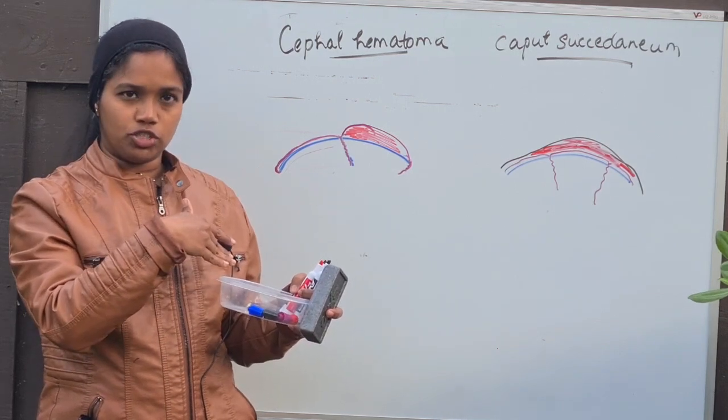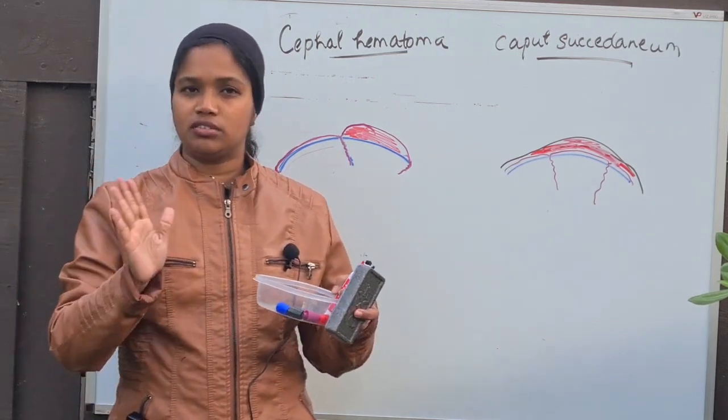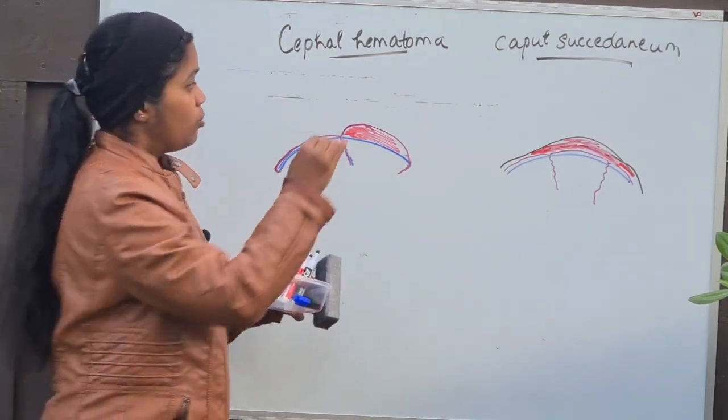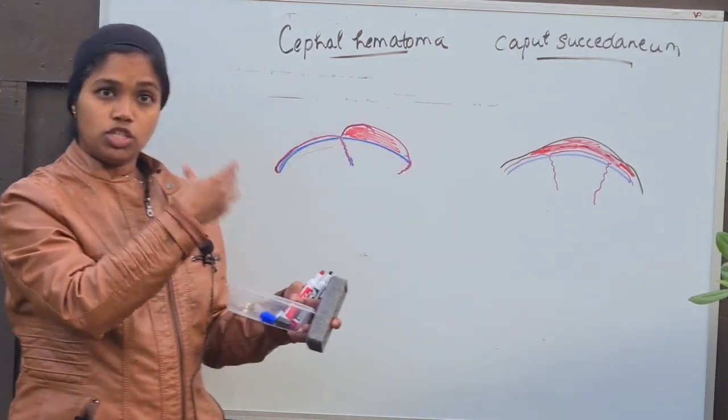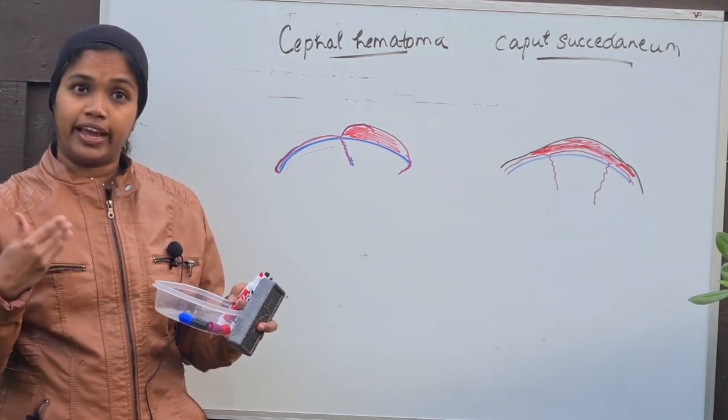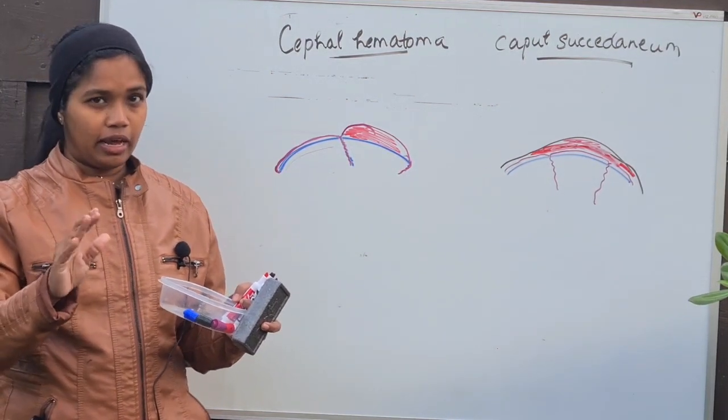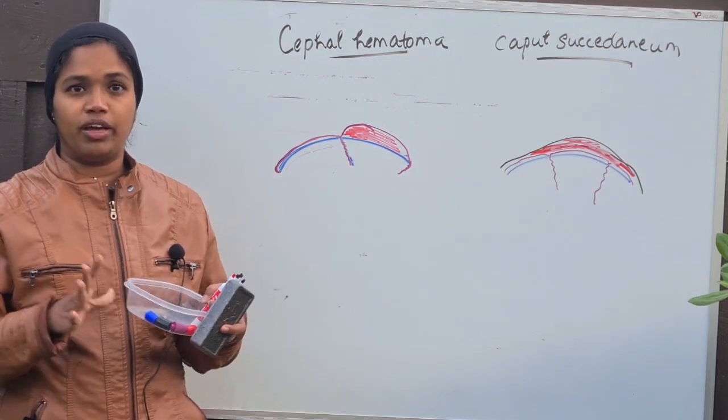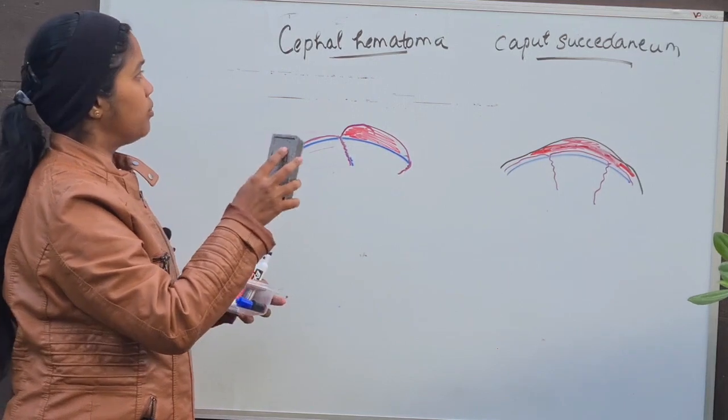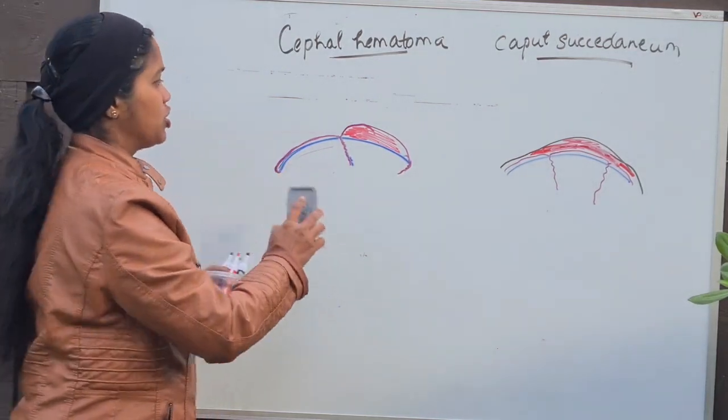For Cephal Hematoma as well as caput succedaneum, the treatment is just reassurance and observation. Sometimes, in some cases, because of the absorption of this blood, there will be a rise of bilirubin and the child can have jaundice. That can happen. That is one point which we need to be aware of. This is the difference between Cephal Hematoma and caput succedaneum.